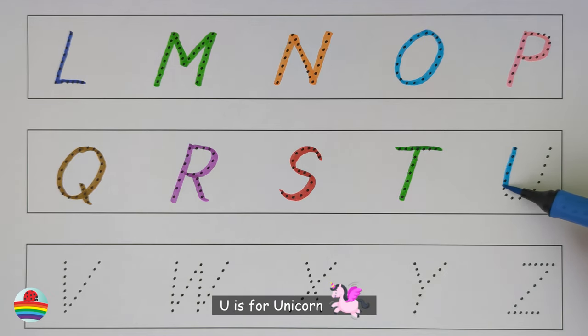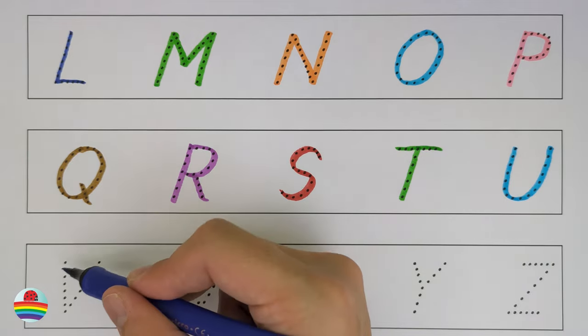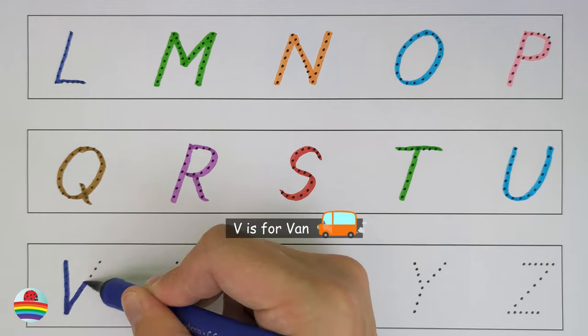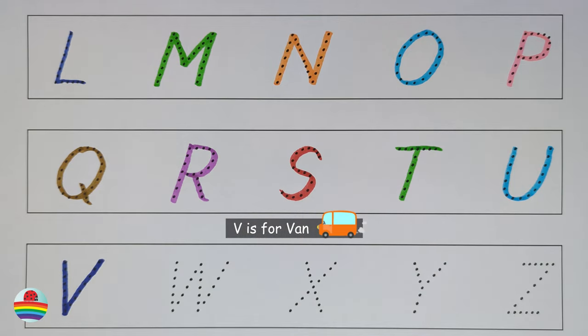U. U is for unicorn. U. V. V is for van. V.